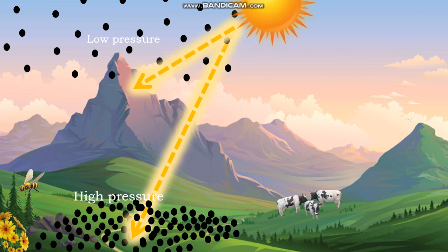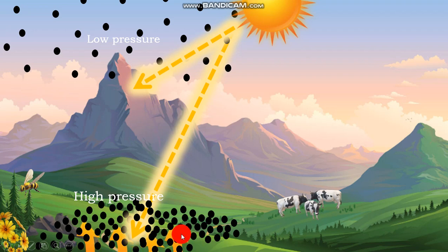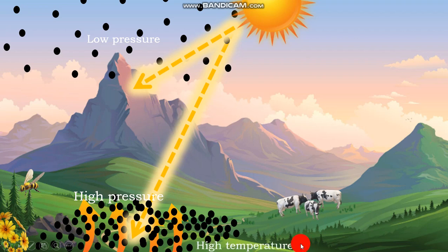At the low altitude areas the pressure is high, the air is compressed and compacted. As the ground emits terrestrial radiations, as you can see here, they will be absorbed by the air right above the ground. Once those radiations are absorbed right above the ground, this will definitely result in high temperature — explaining why low altitude areas experience high temperatures.